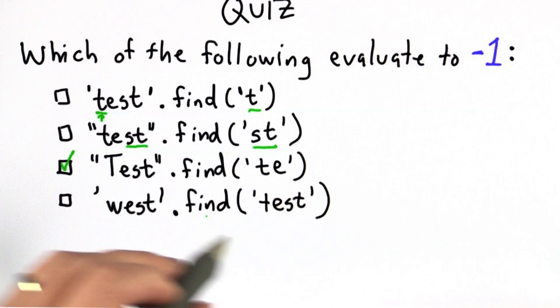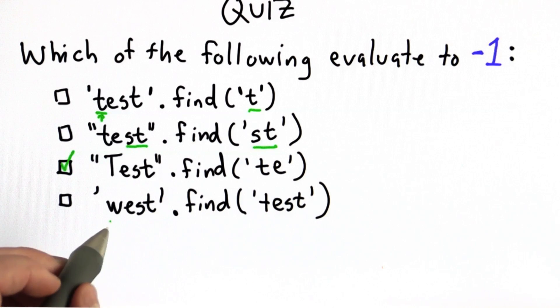And for the final one, we're searching for the string test within the string west. They don't match exactly, so this would also return negative 1.